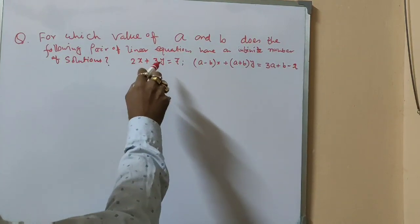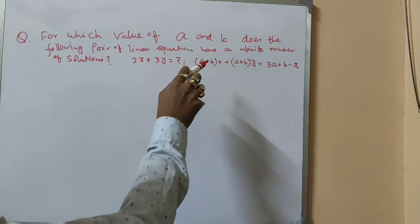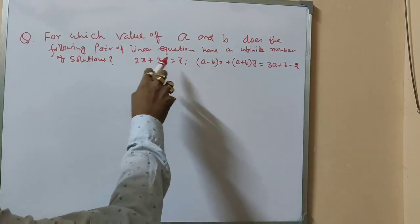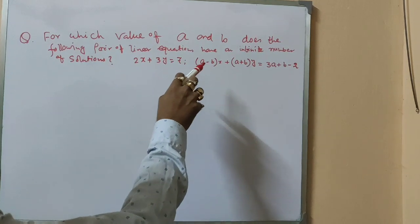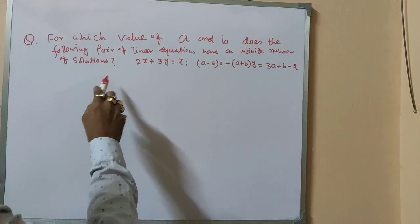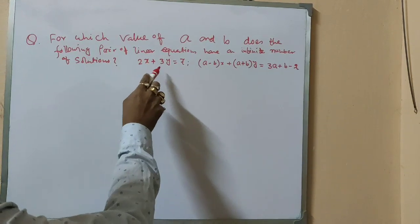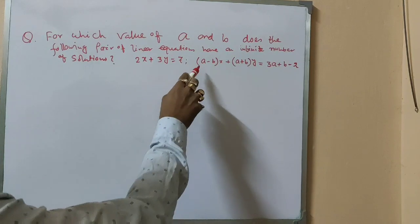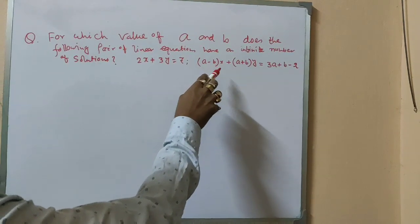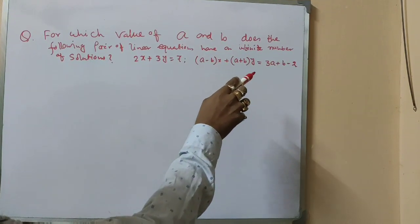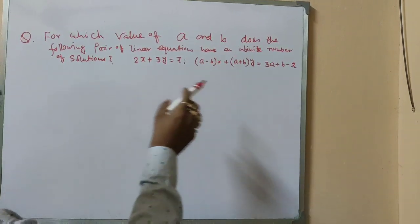For which value of a and b does the following pair of linear equations have an infinite number of solutions? 2x plus 3y is equal to 7, and a minus b into x plus a plus b into y plus b minus 2.